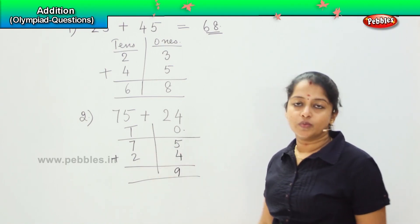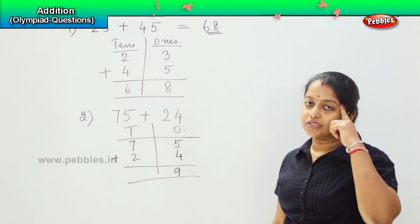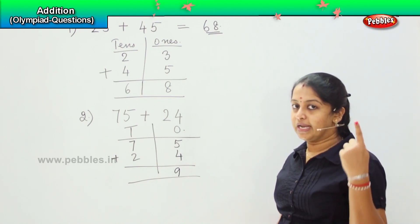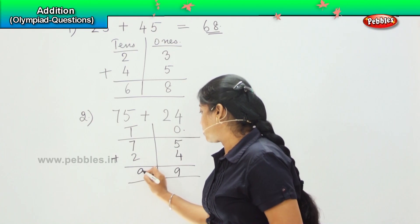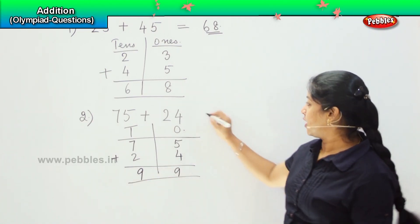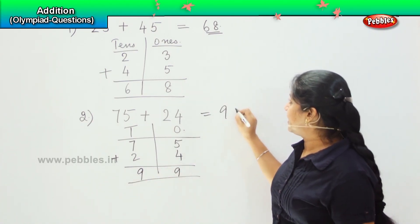And 7 plus 2: 7 in the mind, 2 on the fingers — after 7: 8, 9. So, what is your answer? Your answer is 99.